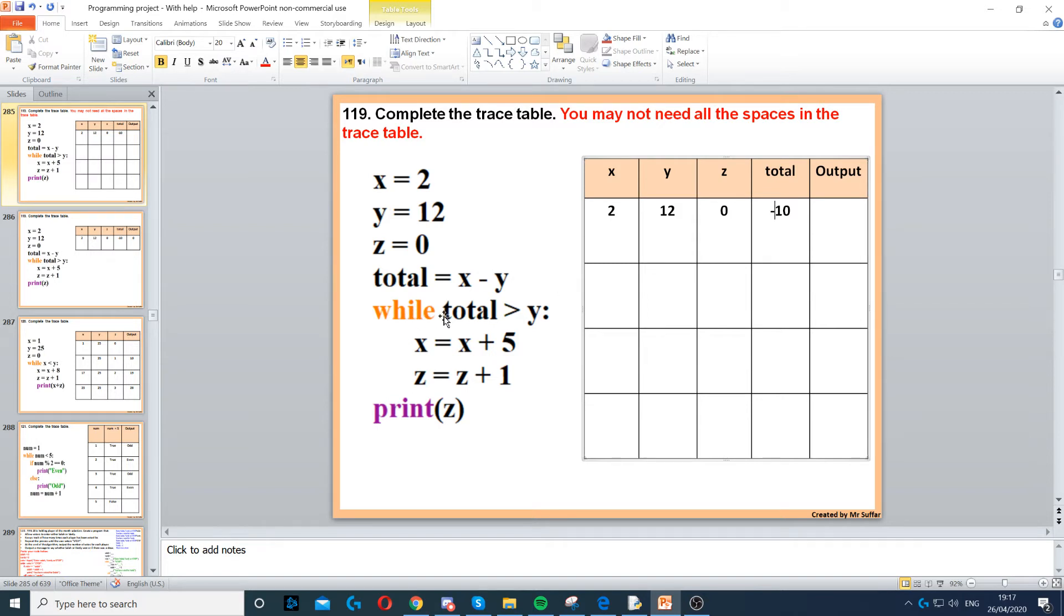Then, it says while total is greater than y. Now, that's not true. Because this is false, we're not going to enter the while loop at all. So, we skip all the way to the print command, which is print z, which is 0.